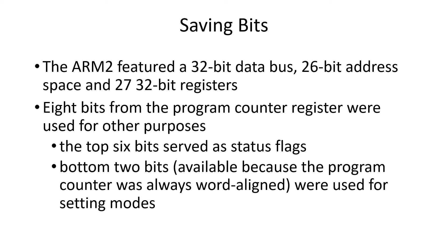The ARM 2 features a 32-bit bus, a 26-bit address space, and 27 32-bit registers. If you have a 26-bit address space, 2 to the 6 is 64 and 2 to the 20 is a million, so it's 64 million bytes of addressable memory. There are eight bits of the program counter that were used for other purposes. Since we have 32-bit values, there are six bits at the top and the lower two bits weren't used.